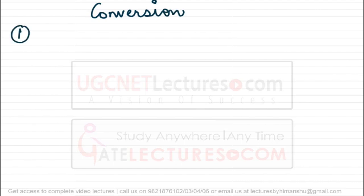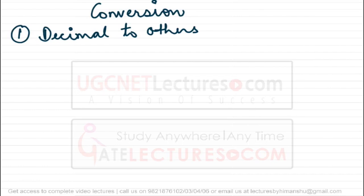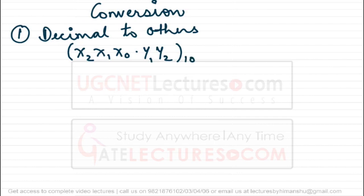Let us now learn about interconversion between two different number systems. First we are going to look at conversion from decimal to other number systems. A decimal number can have an integral part as well as a fractional part. We are taking a general decimal number with integral part x2 x1 x0 and two fractional digits. We want to convert it into a new number system with base r, where r can be any value: 2, 8, 16, or any other value.